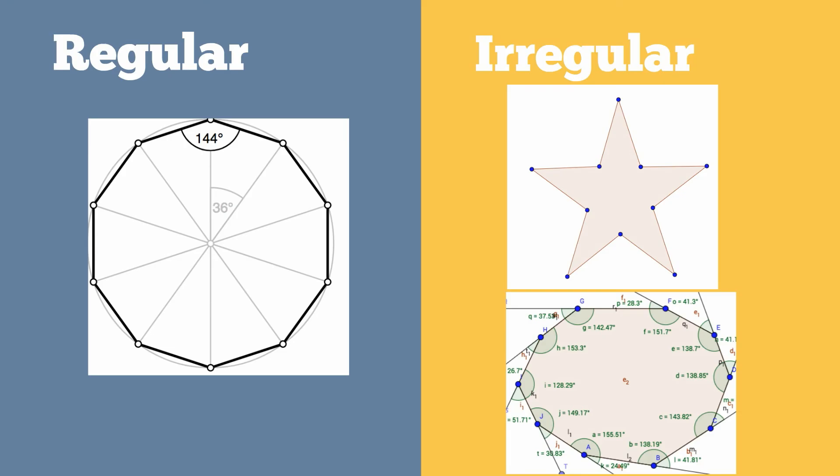Decagons can also be irregular, which means the shape does not have equal sides or angles. Here are a couple of examples.